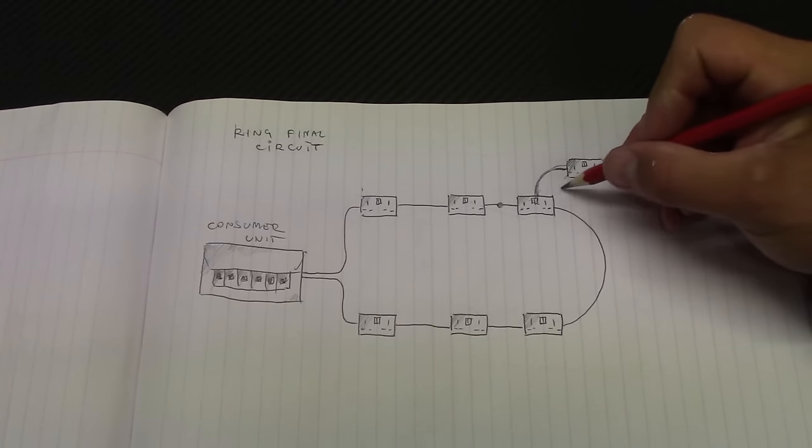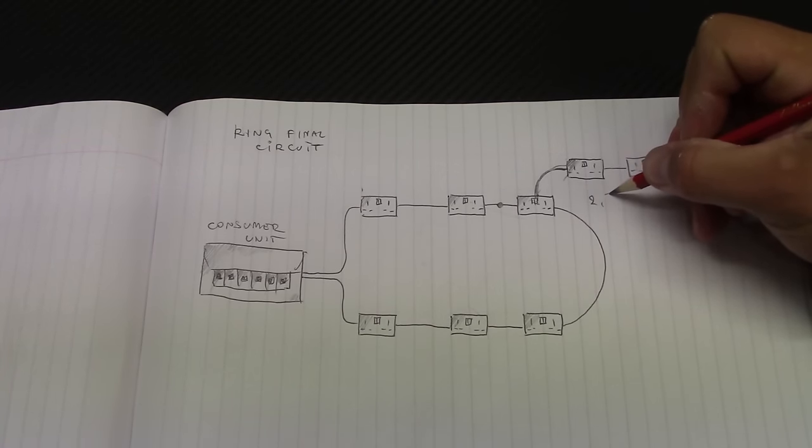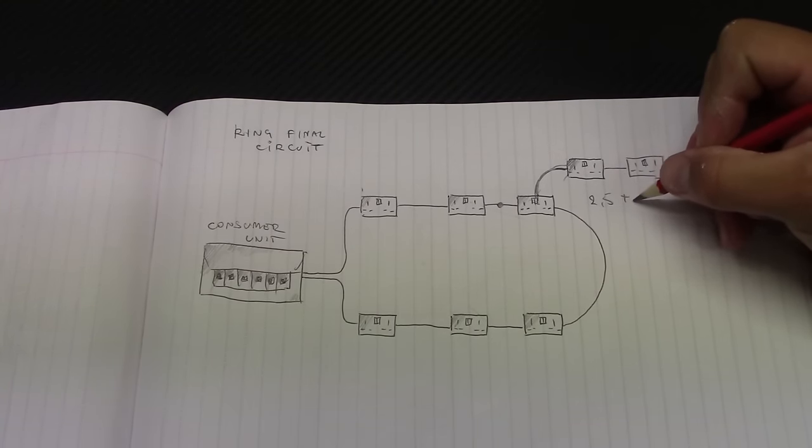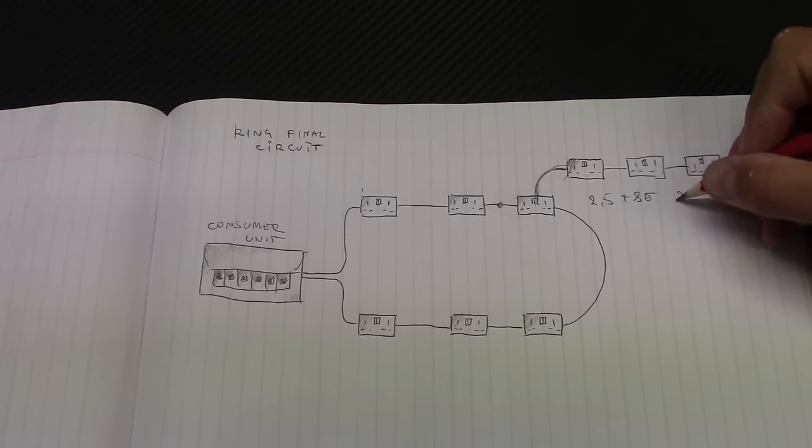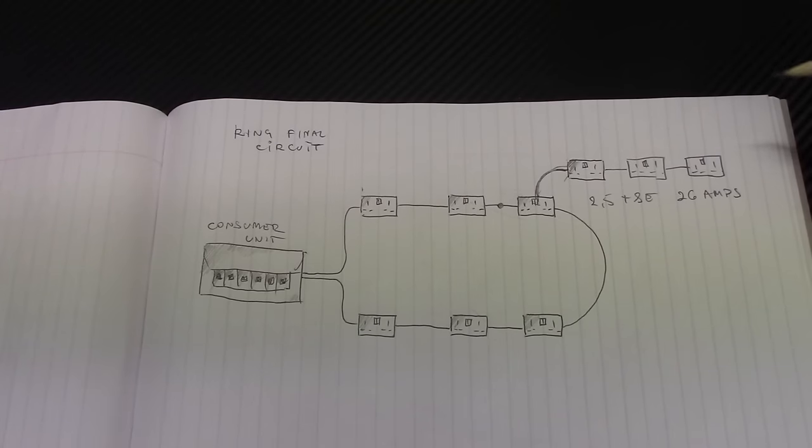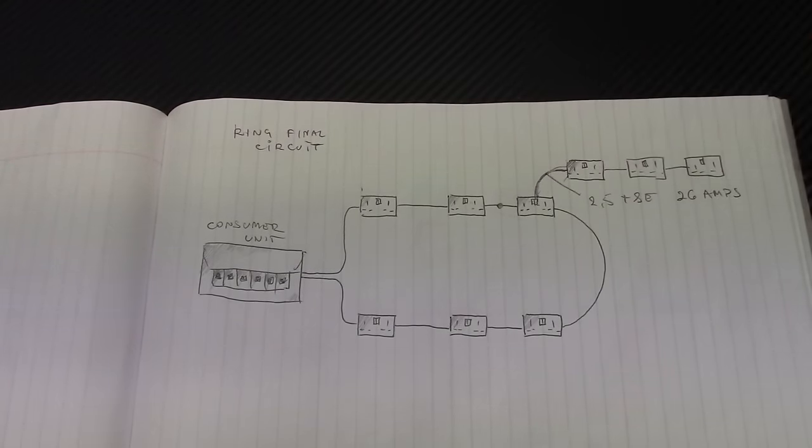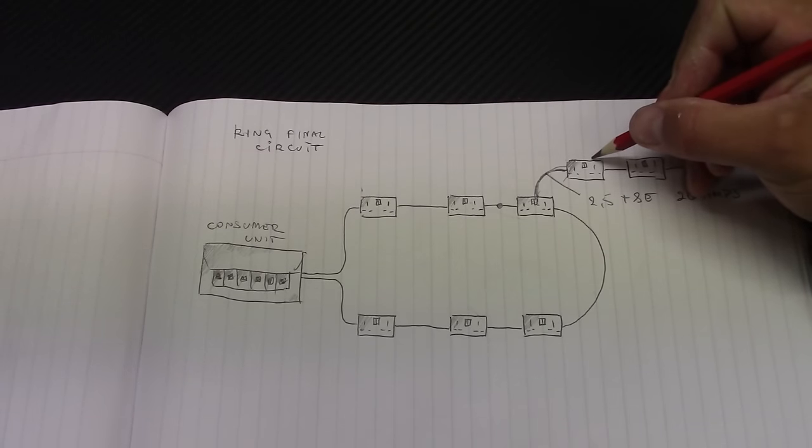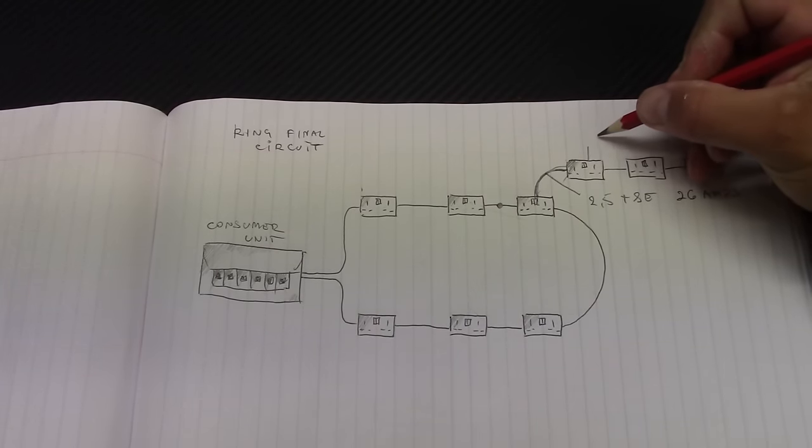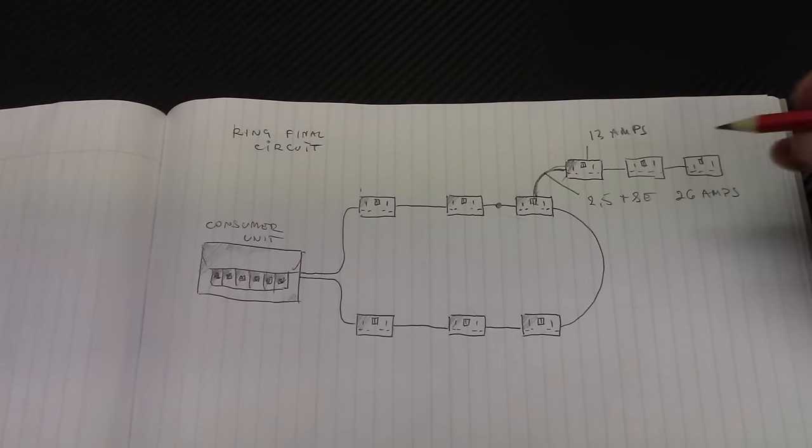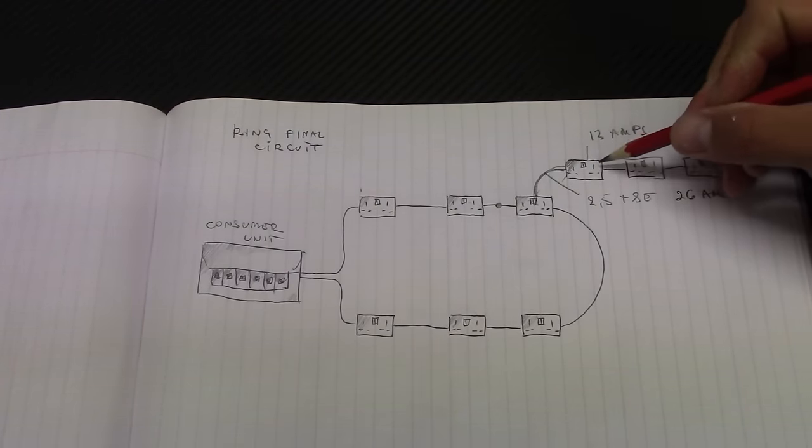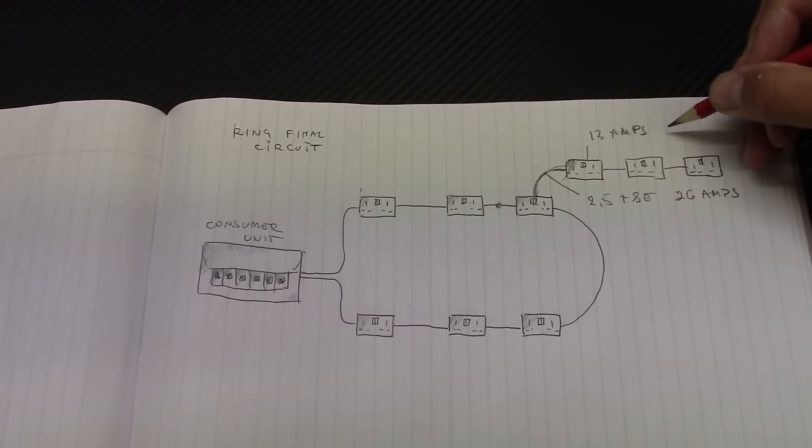Because this cable is 2.5 twin and earth cable and it's rated 26 amps if clipped direct. Now this socket outlet is rated 13 amps but some good quality socket outlets can take up to 19.5 amps.